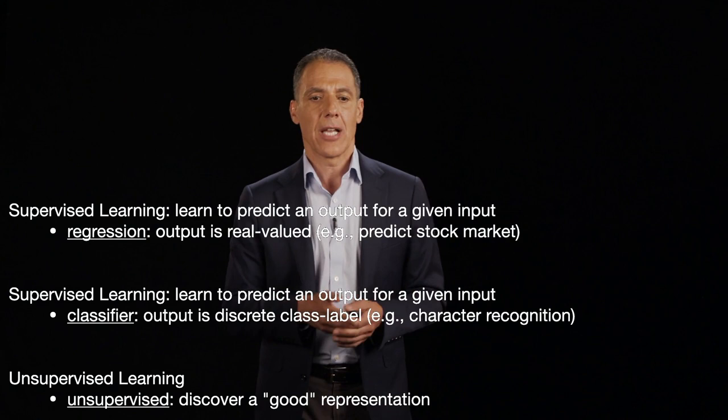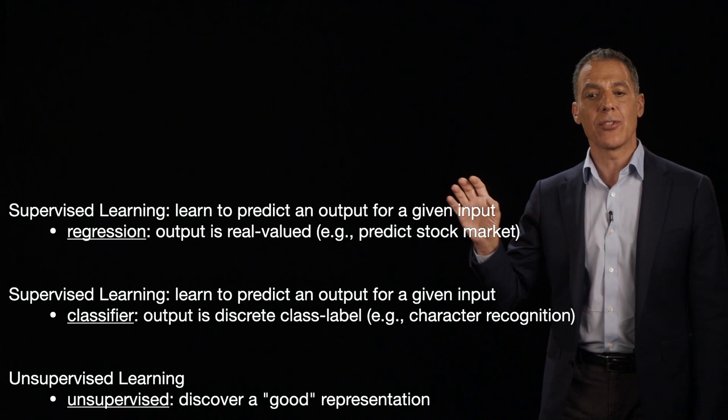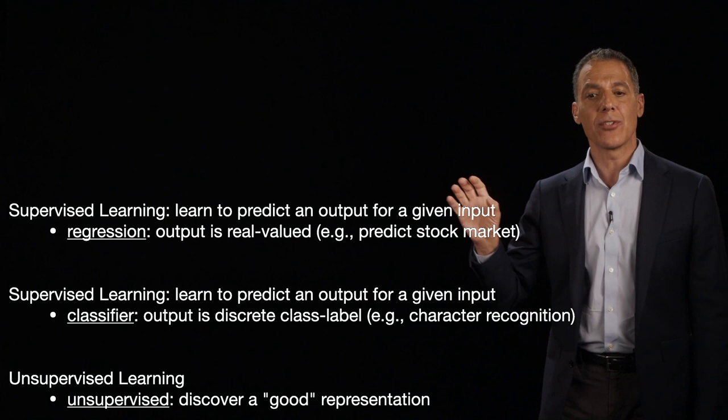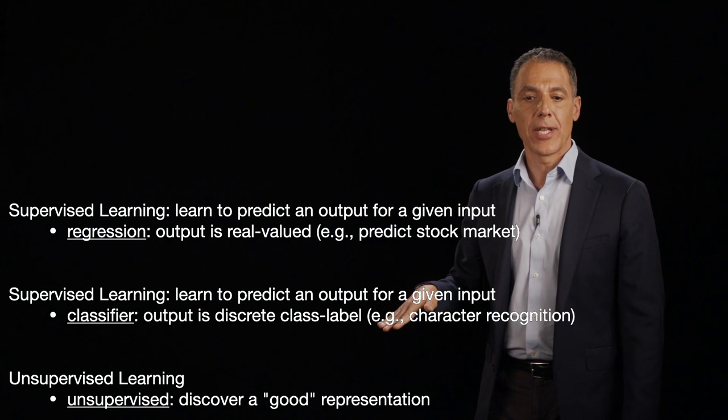Supervised learning is learning how to predict an output for a given input — think about learning as a function. When we talk about supervised learning in terms of regression, the output is a real-valued number. For example, I want to predict the stock market — what fraction will it go up or down? I want to predict the temperature tomorrow. That's a regression problem.